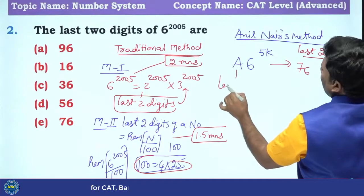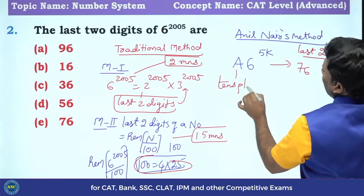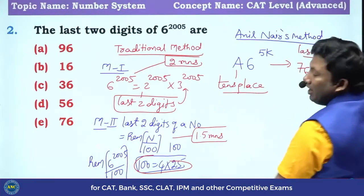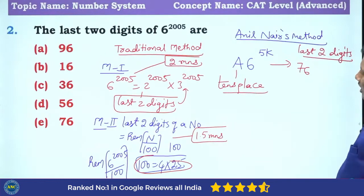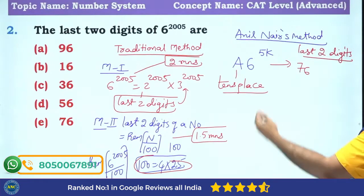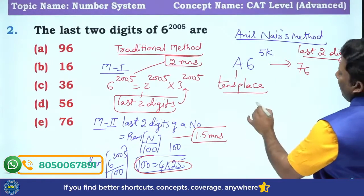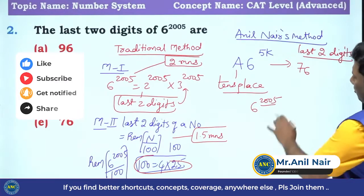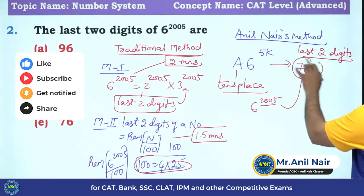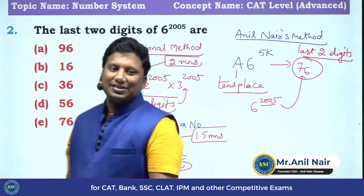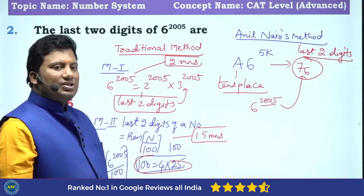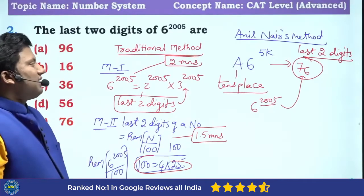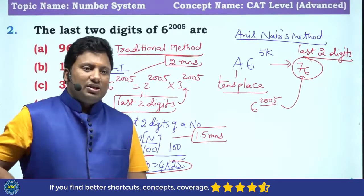A could be any 10th place. In our CAT enrolled branch I gave a proof why it is happening to be 76. Now see here. What are the last two digits of 6 power 2005? 2005 is a multiple of 5. Answer - directly it is 76.